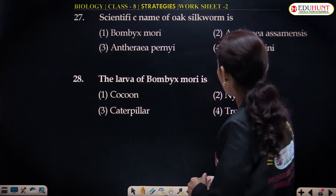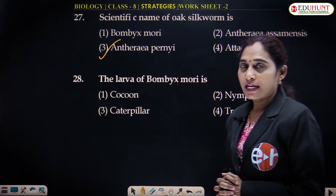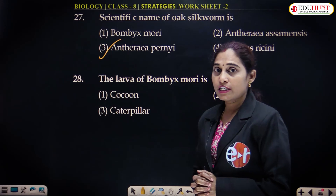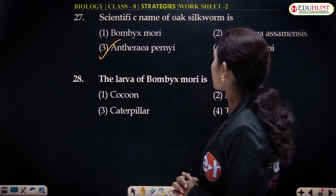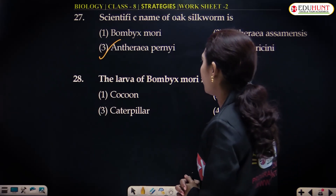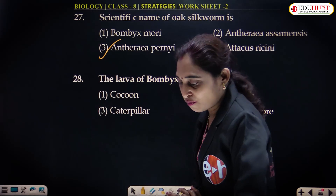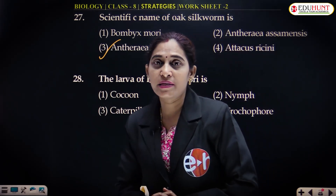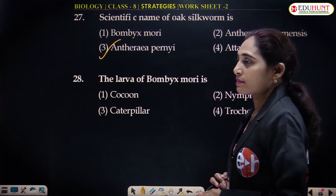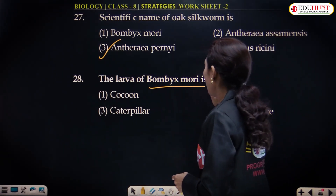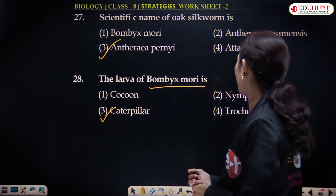The scientific name of the oak silkworm is Antheraea pernyi. Antheraea pernyi is the scientific name of the silkworm that feeds on oak leaves, just as we have the mulberry silkworm that feeds on mulberry leaves. Bombyx mori is a silkworm; its larva is a caterpillar and the cocoon is the pupa stage.